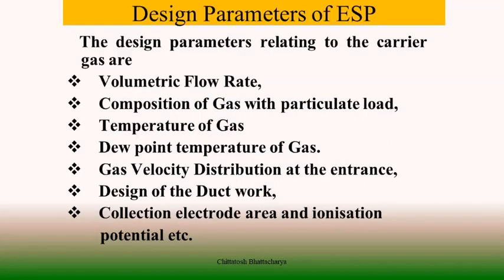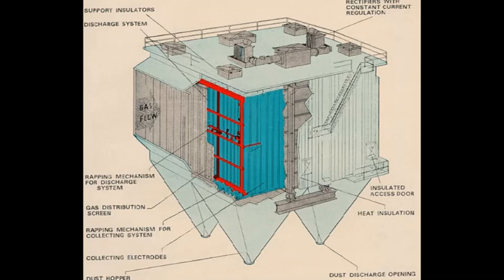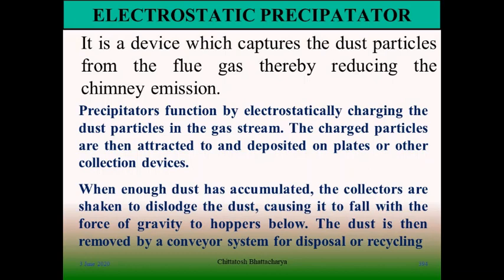The basic design parameters of an ESP in the context of flue gas are: volumetric flow rate of the flue gas, composition of gas with particulate loading, temperature of the gas, dew point temperature of the gas, gas velocity distribution at the entrance of the ESP, design of the ducting in terms of flow, collection electrode areas and their ionization potential. An ESP is a device which captures dust particles from the flue gas and thereby reduces the stack emission by electrostatically charging the dust particles using emitting electrodes inside the gas stream. The charged particles are then attracted to and deposited on collecting electrode plates.